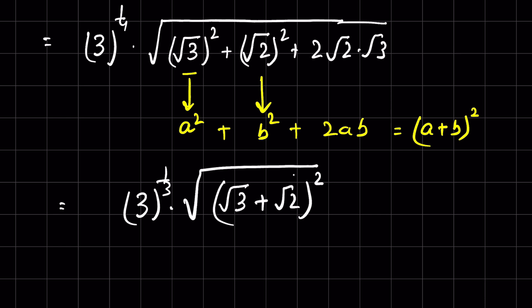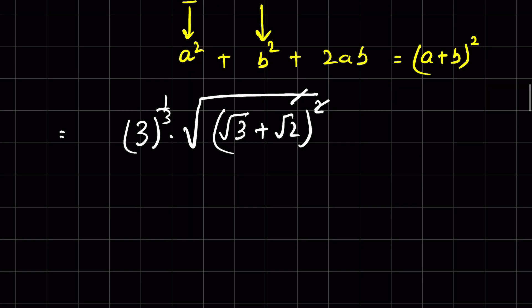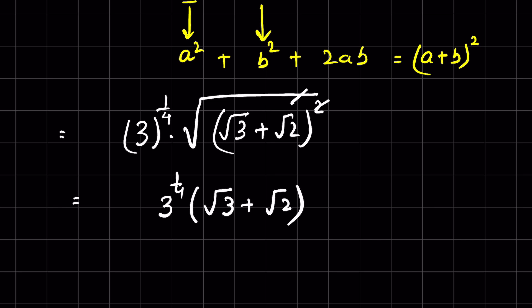We can cancel the square root with the square — note that the exponent here is 1/4, not 1/2. So the final answer is 3 raised to the power 1/4 times (√3 + √2).